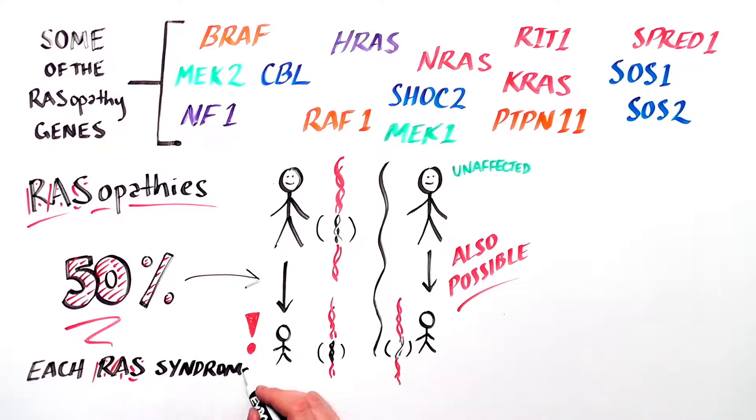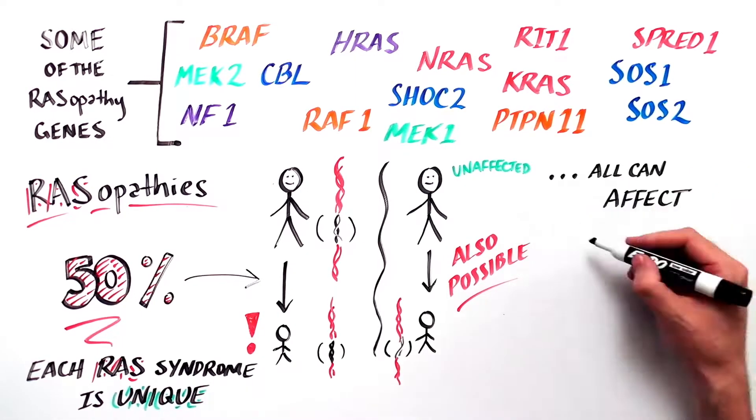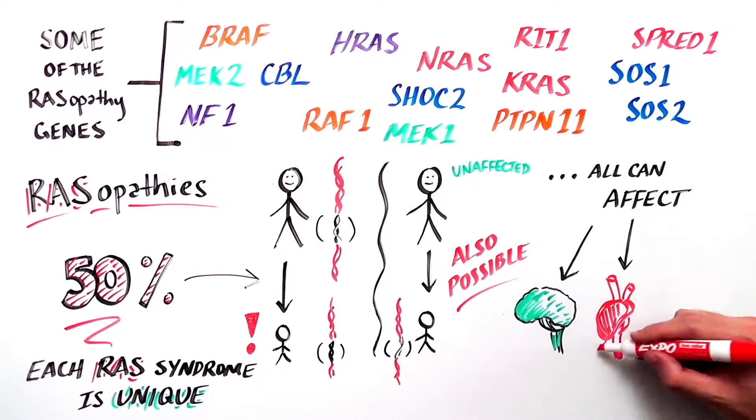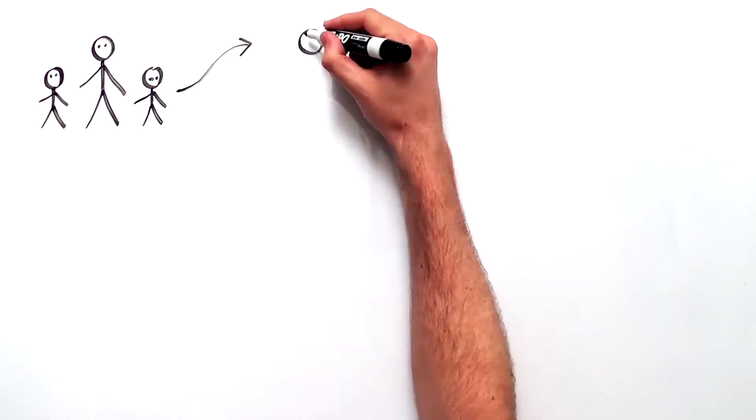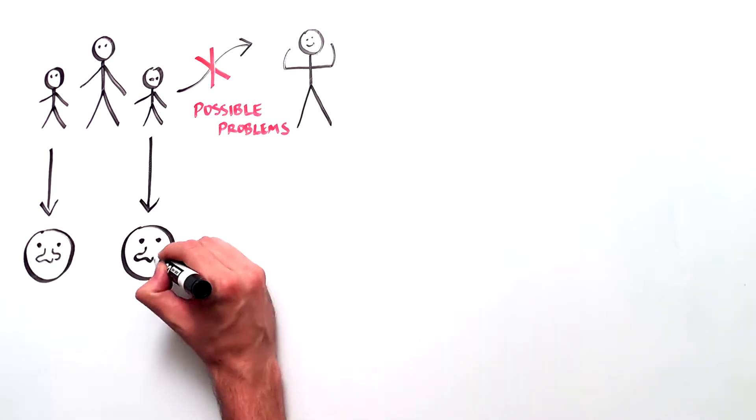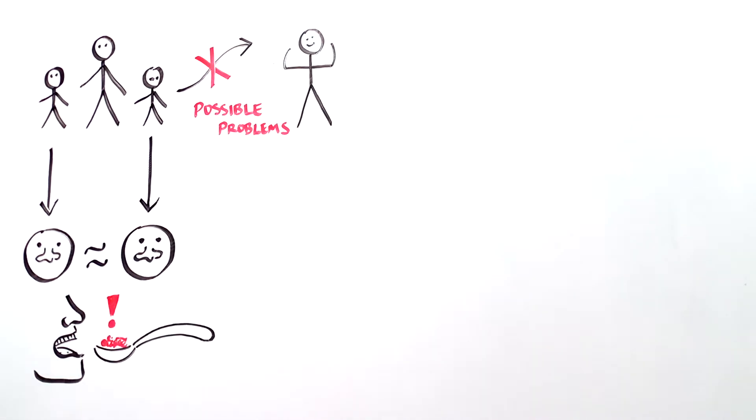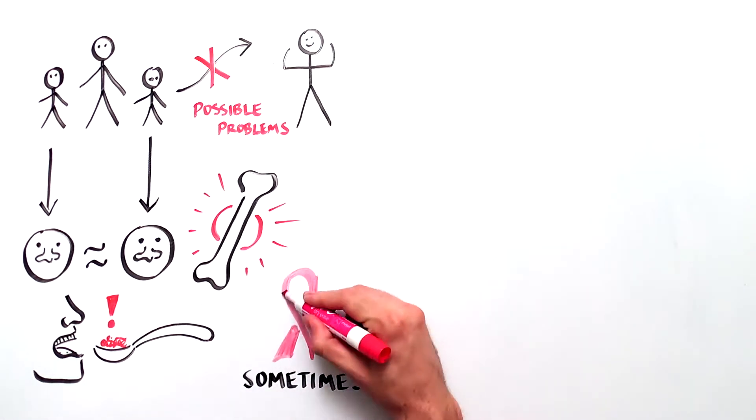While each syndrome has its own unique features, all RASopathies can affect the brain, heart, skin, muscles, and eyes in similar ways. Individuals may have delays in their development, growth problems, similar facial features, feeding difficulties, bone problems, and in some cases cancer.